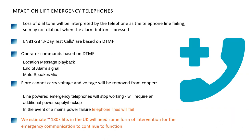So what's the impact on lift emergency telephones? As we transition from copper to fiber, there's the loss of the dial tone, which many units will interpret as the telephone line failing — potentially causing them not to dial out when the alarm button is pressed. Next, the three-day test calls that emergency telephones are obliged to place under the EN8128 standard rely on DTMF tones, and the loss of DTMF on the fiber network means those calls cannot be placed, so you will not have a compliance record of your telephone being in service.